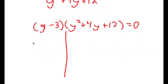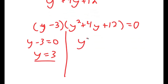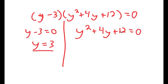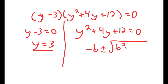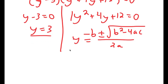This gives me two equations: y minus 3 equals 0, meaning y equals 3, which we already know. And y squared plus 4y plus 12 equals 0. To solve this, we use the quadratic formula: negative b plus or minus the square root of b squared minus 4ac, all over 2a. Here, a is 1, b is 4, and c is 12.